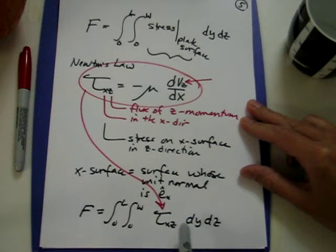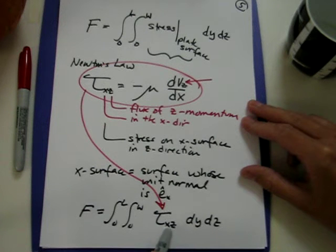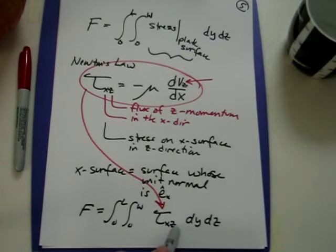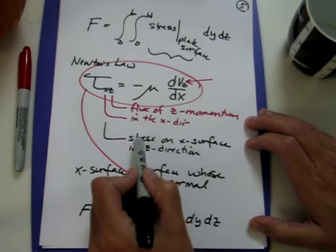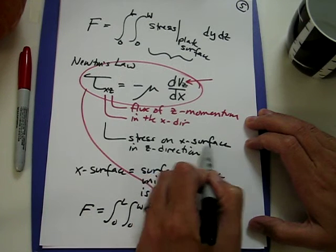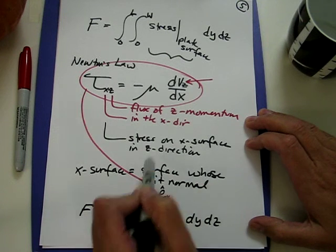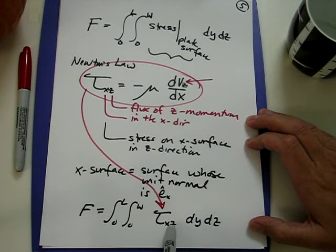And we talked last time that the stress component we want to integrate is the tau_xz stress component, because we are interested in the stress on an x surface in the z direction, and that's exactly what this tau_xz is.